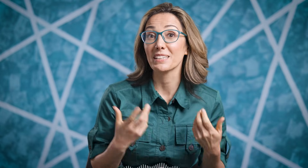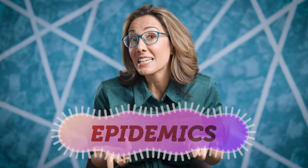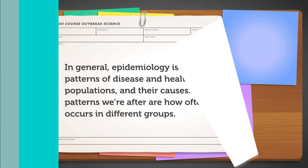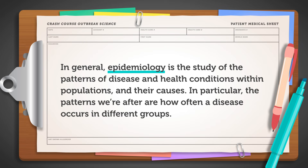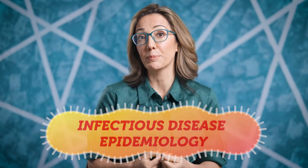At first, it seems obvious that epidemiology would be the study of epidemics — the clue is in the name, right? While some epidemiologists do study epidemics and outbreaks, the field is actually much broader. In general, epidemiology is the study of patterns of disease and health conditions within populations and their causes. In particular, the patterns we're after are how often a disease occurs in different groups. For our purposes, we're going to focus on infectious disease epidemiology, since that's the kind most relevant for outbreaks.